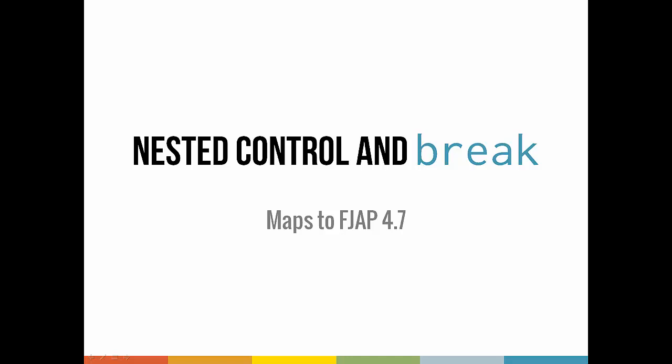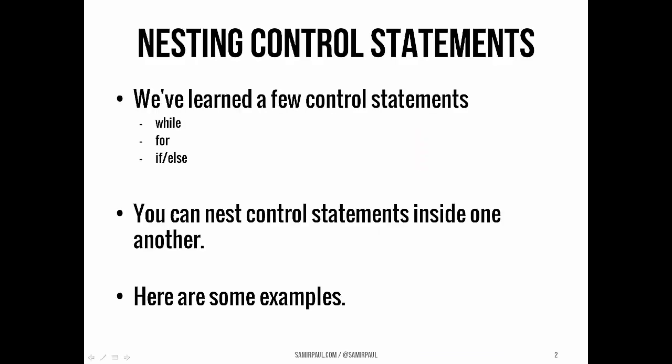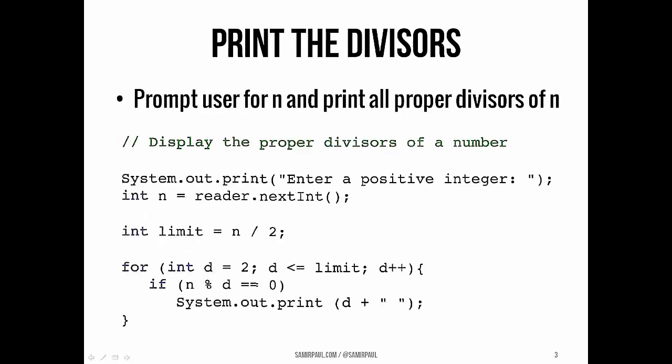We've touched so far a bunch of different types of control statements. We've looked at while loops, for loops, if-else constructs, and in your problem set you looked at switch statements. The big idea today is that we can put these control statements inside one another — we can nest them. We're going to look at a couple of examples today and hopefully they'll be somewhat illuminating.